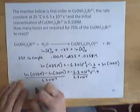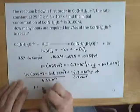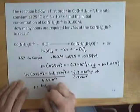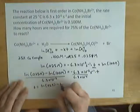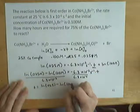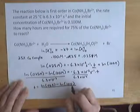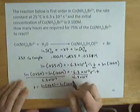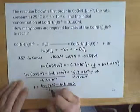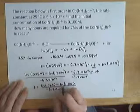So time ends up being equal to natural log of this one minus natural log of our initial concentration divided by negative 6.3 times 10 to the negative sixth.